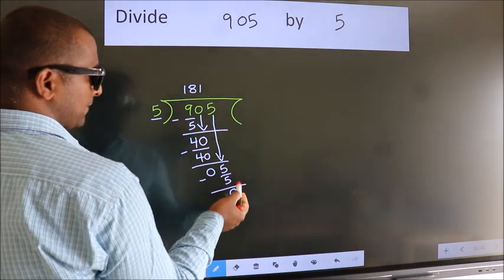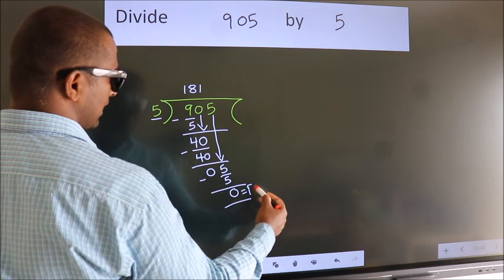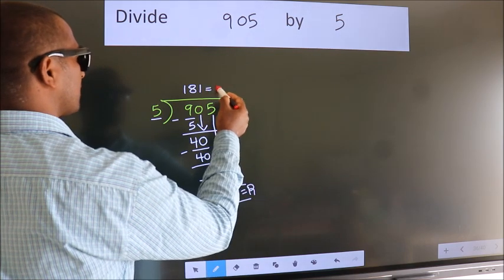No more numbers to bring it down. So we stop here. This is our remainder. This is our quotient.